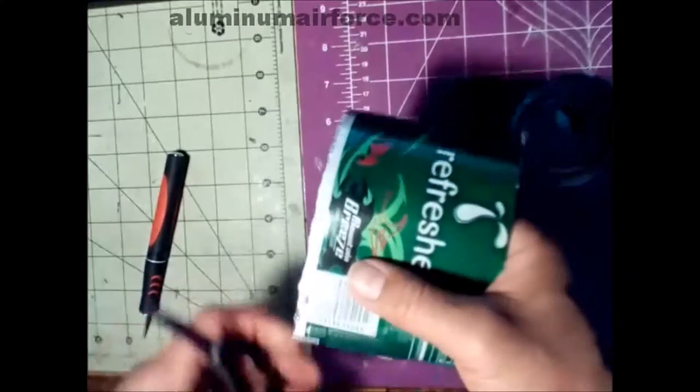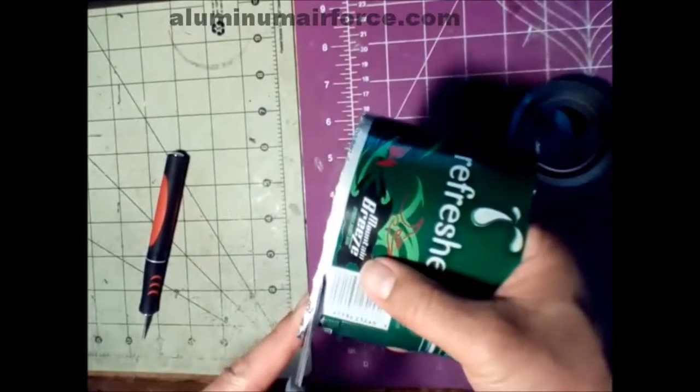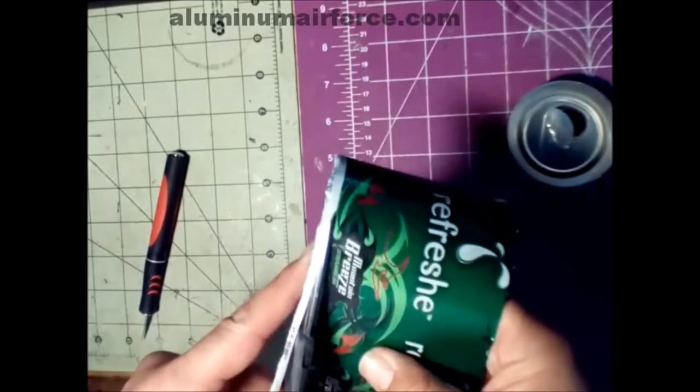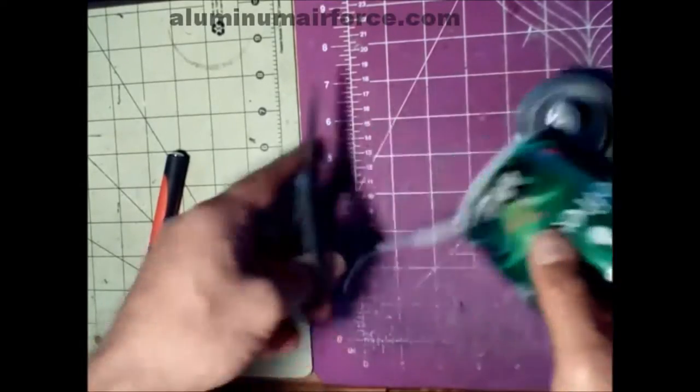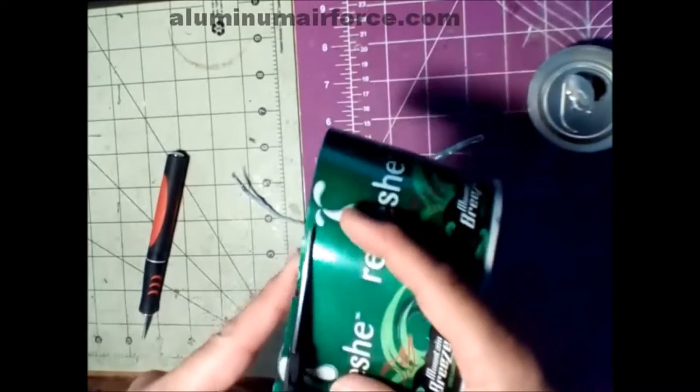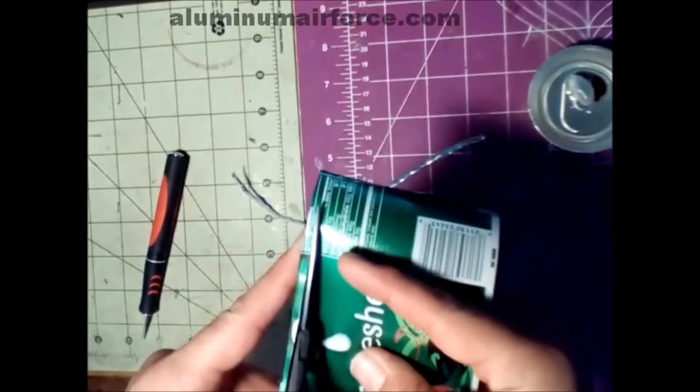Now the bottom edge, eighth of an inch. We're going to cut that off. Nice, straight line. It's critical to have the straight lines to be able to create can panels or trace our templates. Eighth of an inch now off the top. And here we go. We've got it cut off.